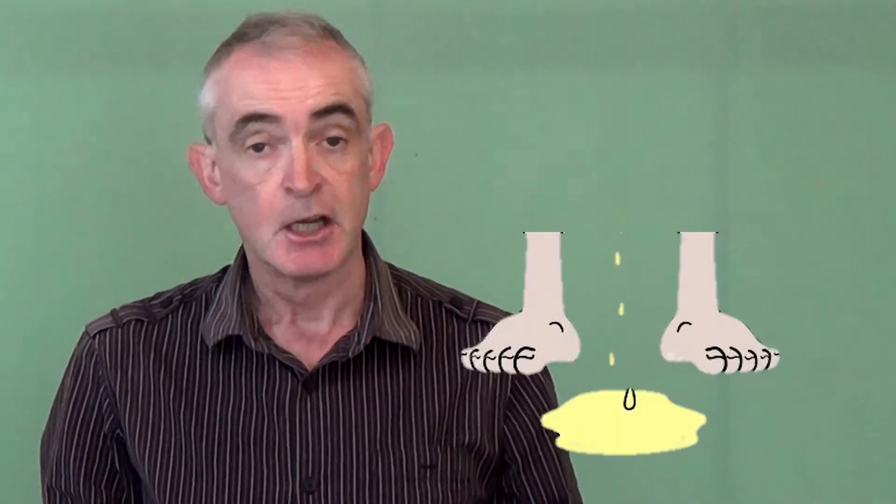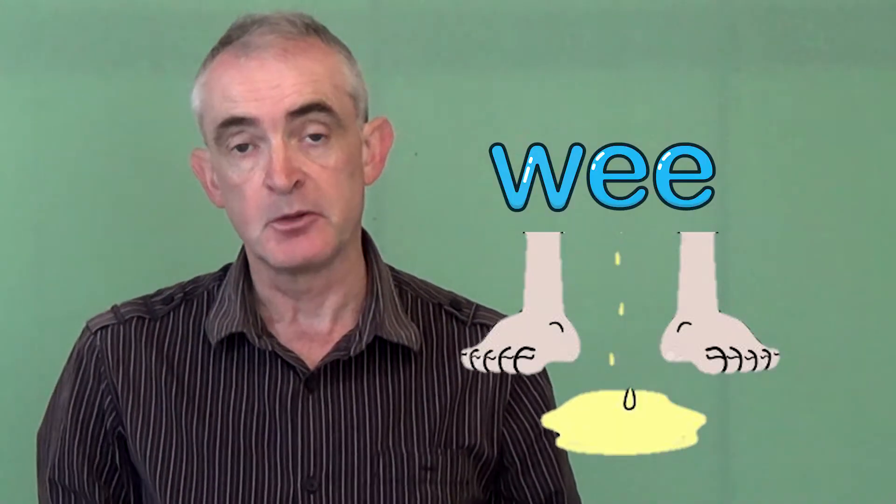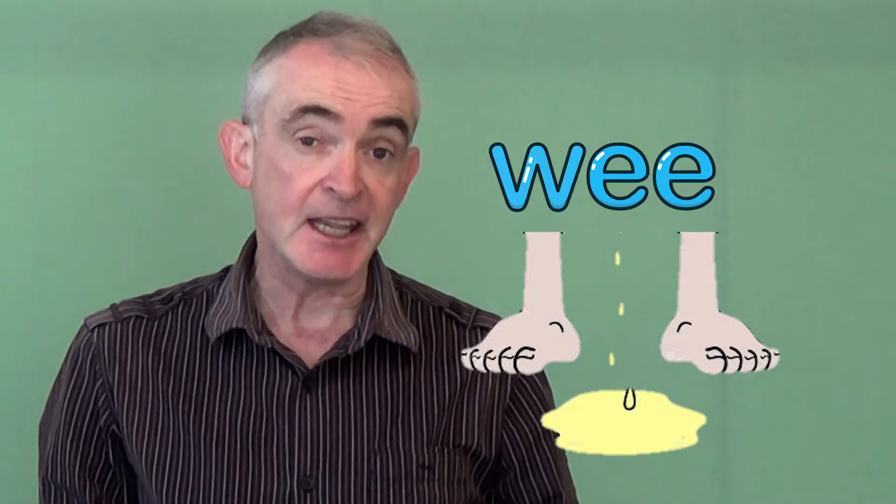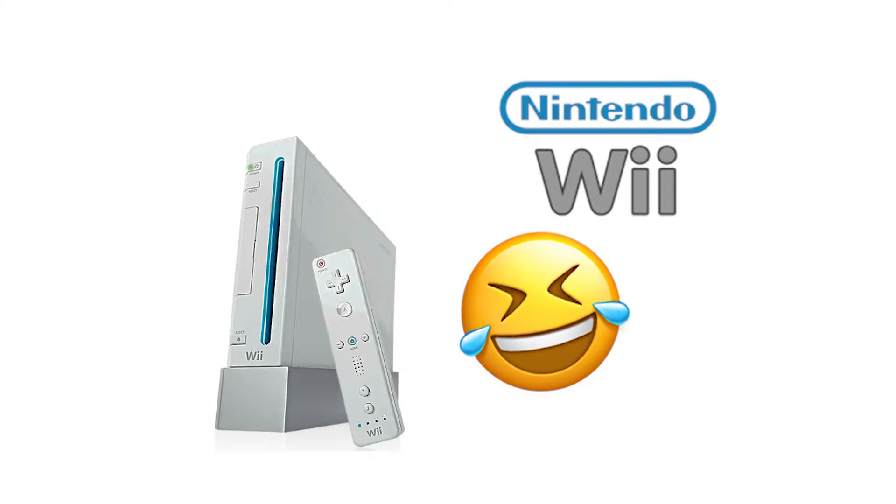Young children will sometimes call this wee, spelt W double E. So you can imagine the fun that English speakers had when Nintendo first released their Wii.